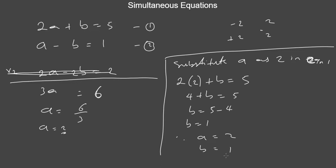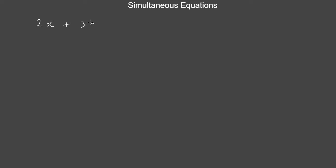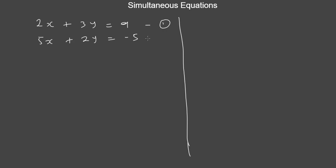Let's take a look at another example. We have 2x plus 3y equals 9, and 5x plus 2y equals minus 5. We want to find the values of x and y. We're going to use both substitution and elimination methods. Using substitution method, the first thing is to determine which variable to make the subject. I'm going to make x the subject in equation 1.